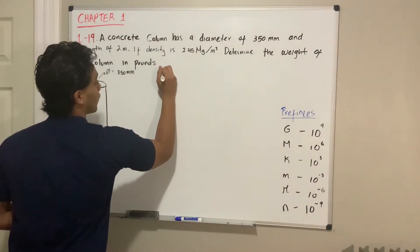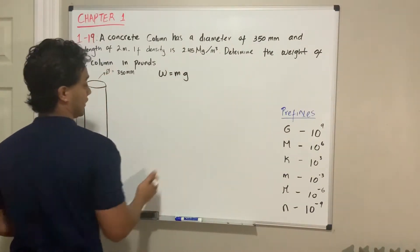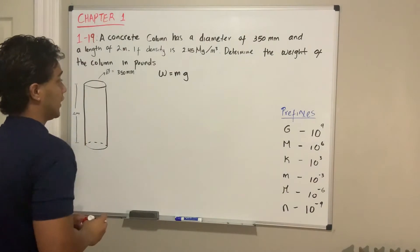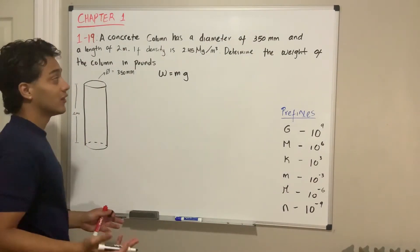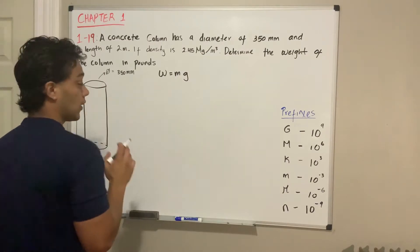In order to determine the weight of the column, we need to remember that weight equals mass times gravity. We know the value of gravity, but we will need to find the value of its mass.